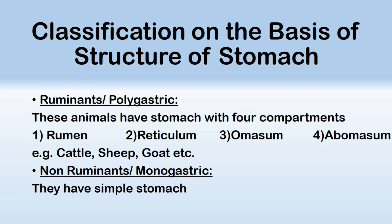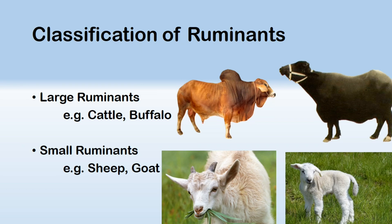The major difference between these animals is that ruminants are capable of digesting cellulose or plant material because they have billions of microorganisms in their rumen which do this job. But non-ruminants or monogastric animals are not able to digest this material.